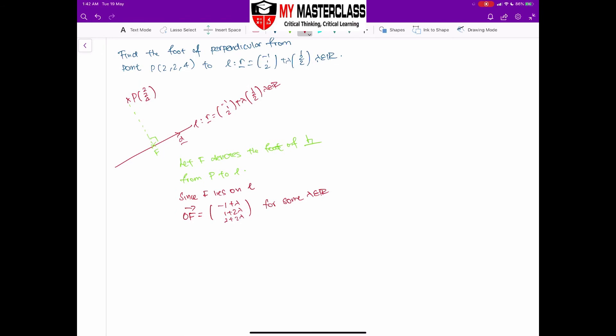From here, what I'm going to proceed on is, I'm going to find my PF. PF will be equal to OF minus OP. And OF I already stated in terms of lambda on my previous part. Minus away OP, which is over here, is equal to (2, 2, 4). If you do a quick calculation, it should derive as (-3 + λ, -1 + 2λ, -2 + 2λ).